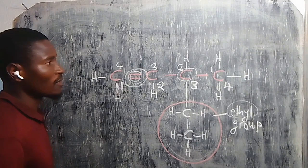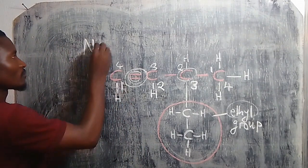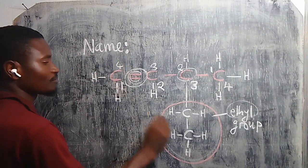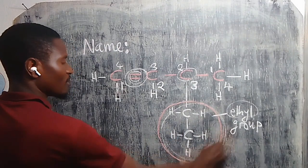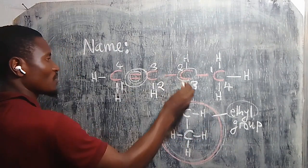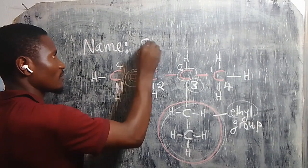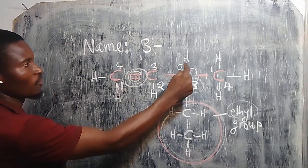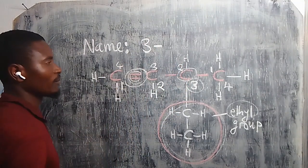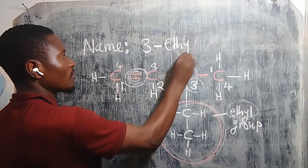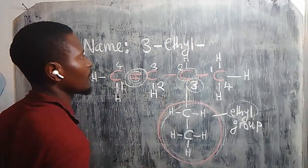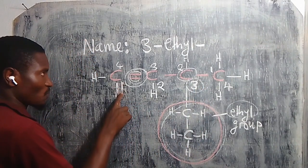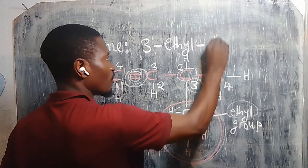So the name is going to be, you start with the ethyl group. Carbon number three means that this ethyl group is branching off from the normal hydrocarbon at carbon number three. So three-ethyl, dash. Then you come to the part where the double bond is occurring, at carbon number one.